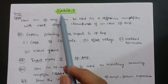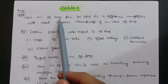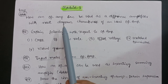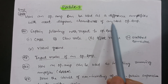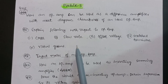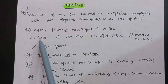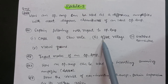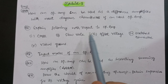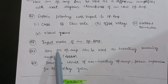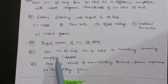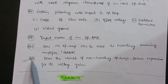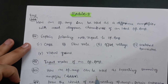In Module 3, explain how an operational amplifier (op-amp) can be used as a difference amplifier with a neat diagram, and cover the characteristics of an ideal op-amp. Also go through op-amp parameters: CMRR, slew rate, offset voltage, matched transistors, virtual ground, and input/output offset voltages. Cover input modes of an op-amp, how an op-amp is used as an inverting summing amplifier (adder), and draw the circuit of a non-inverting op-amp and derive the expression for its voltage gain.